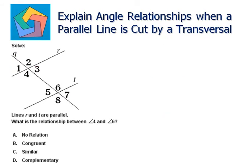Next problem solve: lines R and T are parallel. What is the relationship between angle 4 and angle 6? This is angle 4 and this is angle 6. Both are lying inside the parallel lines and on the opposite side of the transversal.